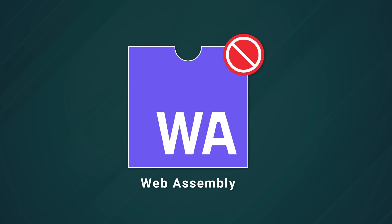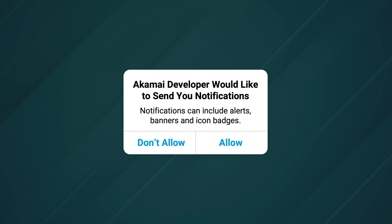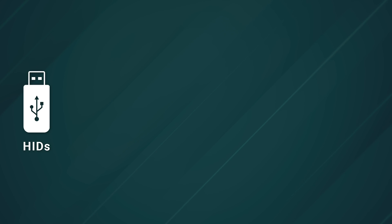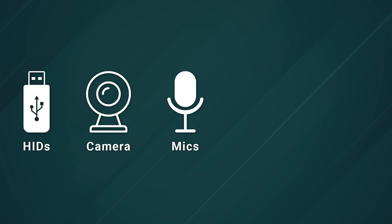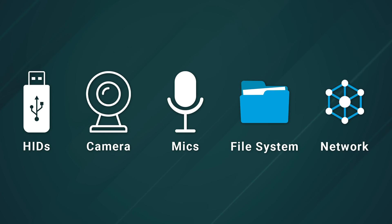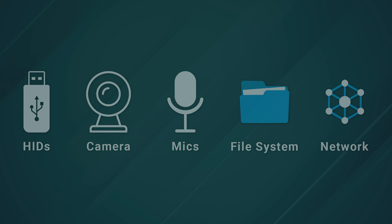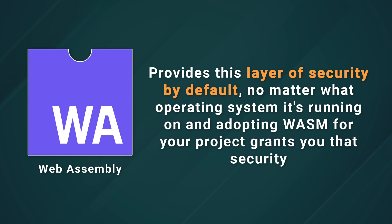WebAssembly implements a security paradigm known as deny by default. You've seen this on your smartphone and other devices where an app must ask for permission to use certain classes of system resources. This includes things like HID devices, cameras and microphones, the file system, and even network access. Not all operating systems support this paradigm — in fact, many do not. But WebAssembly provides this layer of security by default, no matter what operating system it's running on, and adopting WASM for your project grants you that security by default.